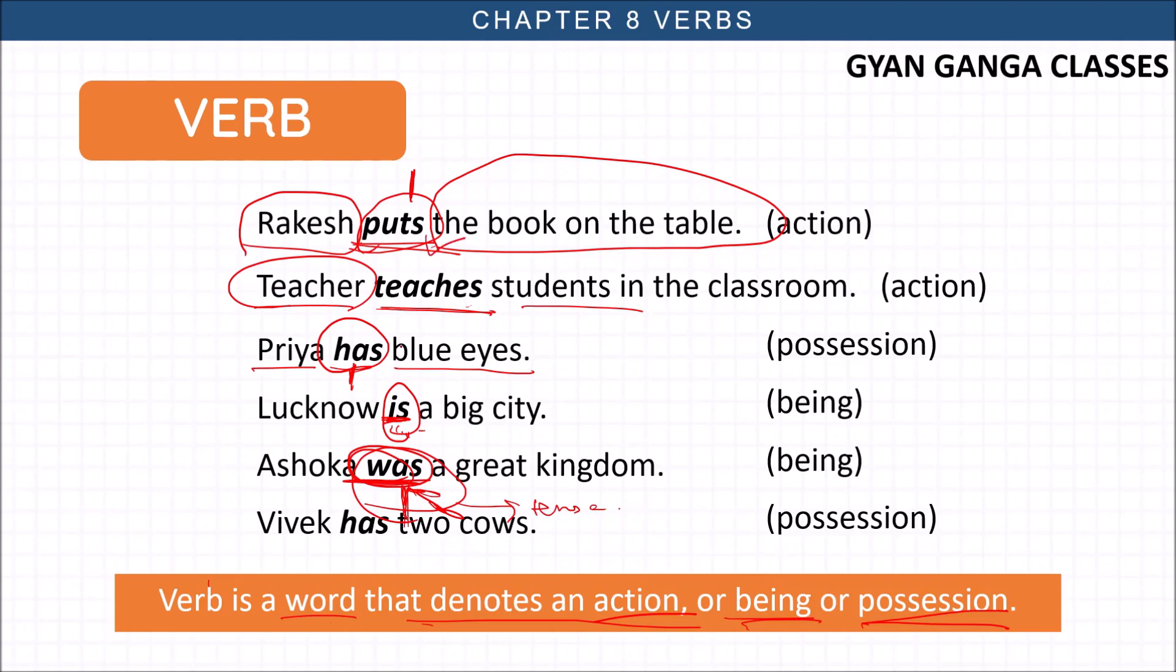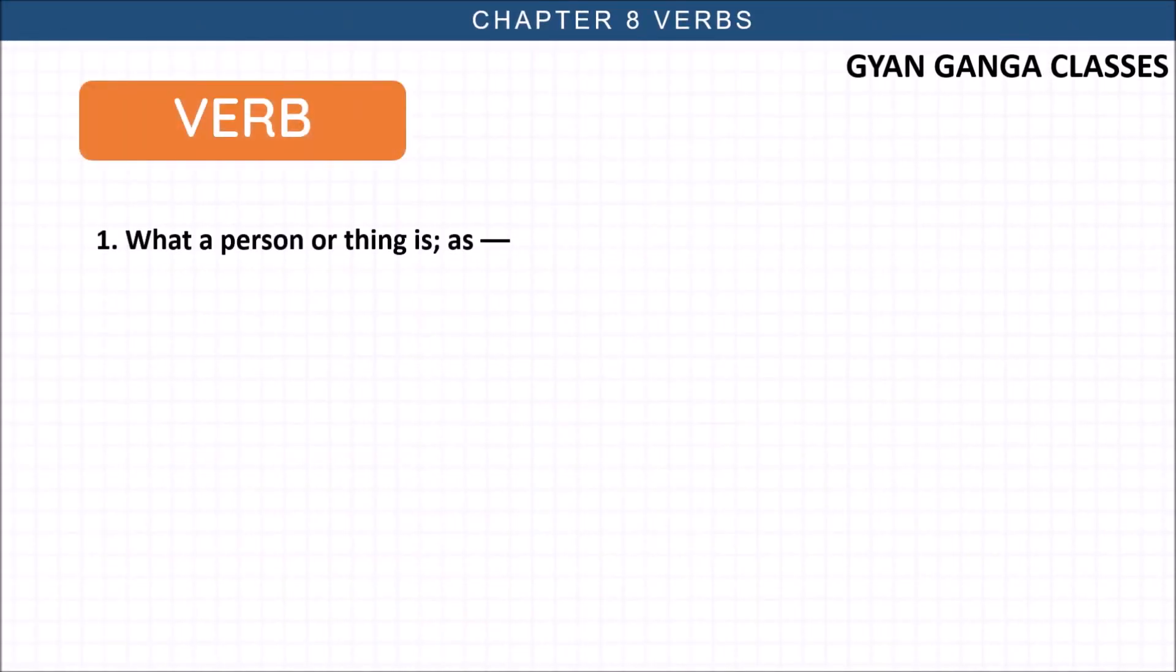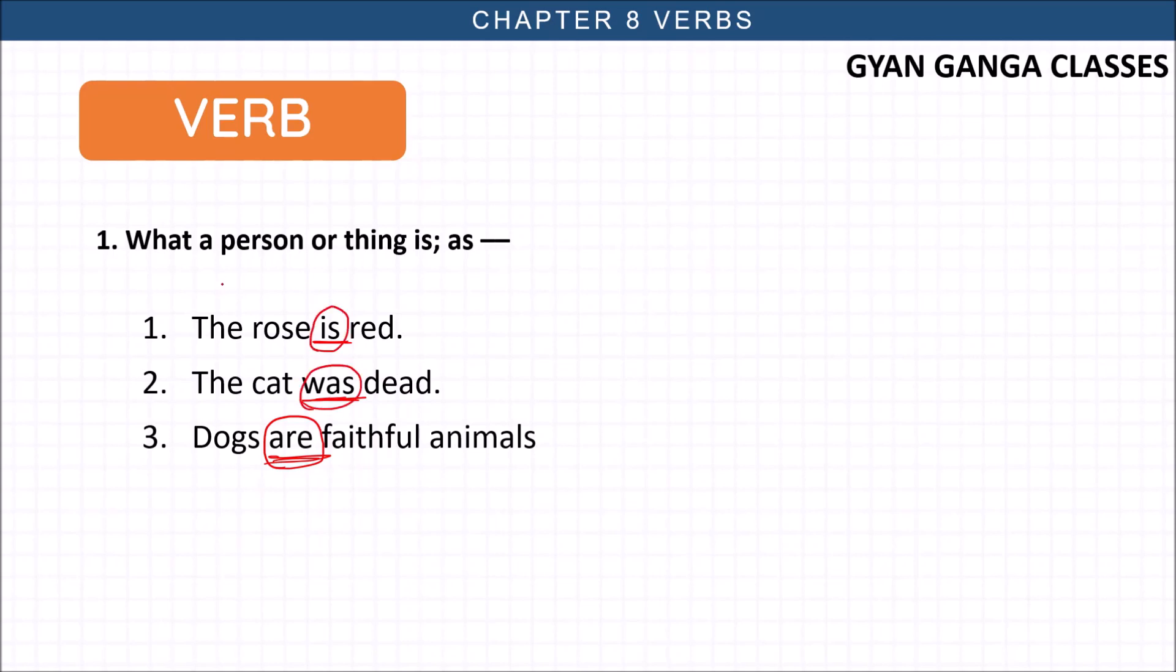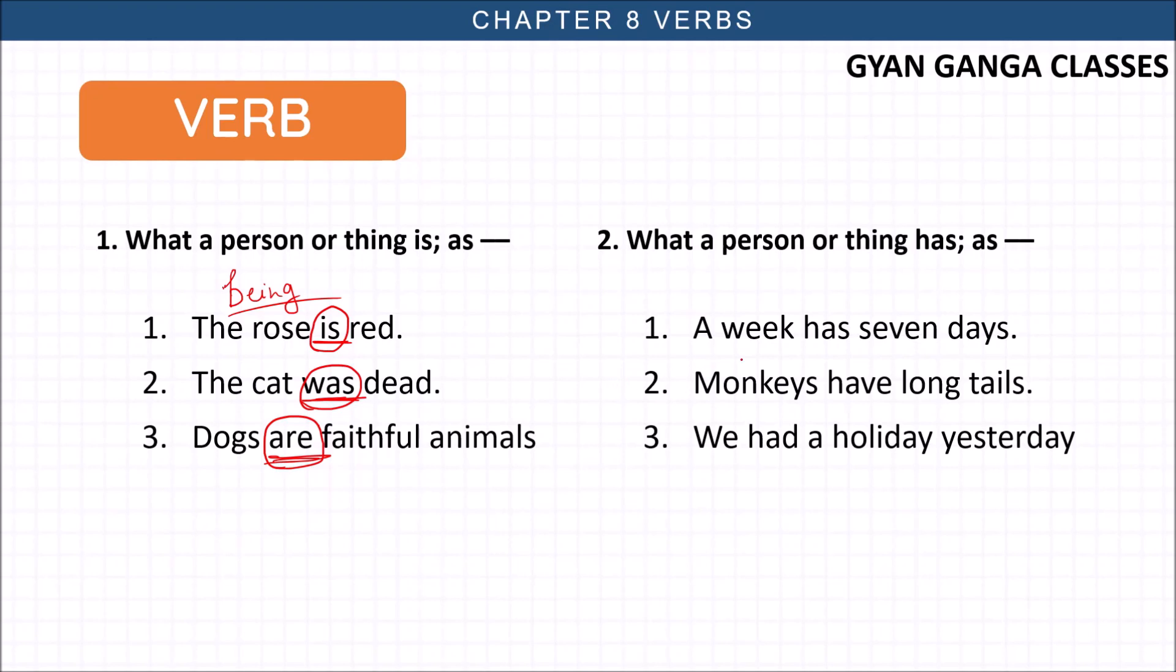Verb is about what the person or thing is, like the rose is red. The cat was dead. Dogs are faithful animals. You can see here is, was, are - these all are the verbs. What the thing a person has - what they have. A week has seven days. Monkeys have long tails. We had a holiday yesterday. Had is the past form of has or have.